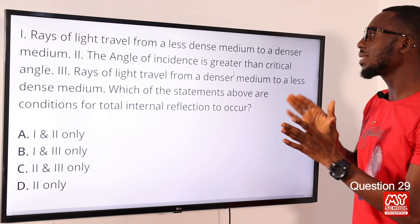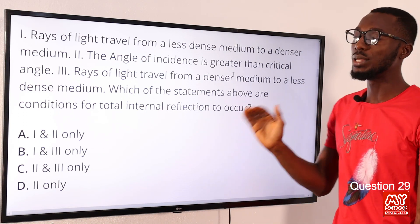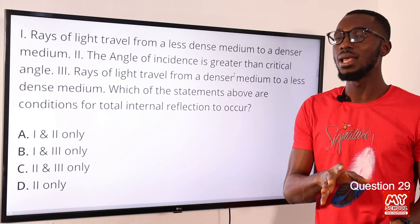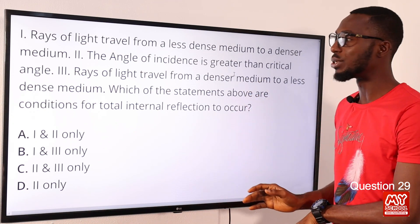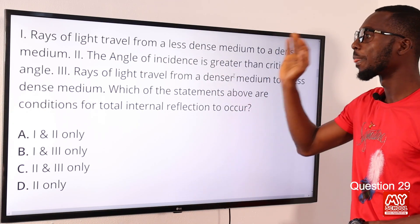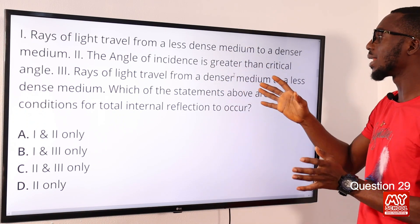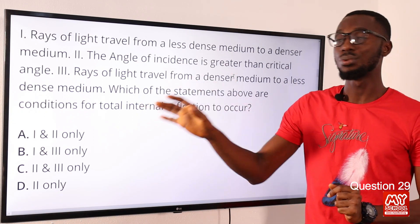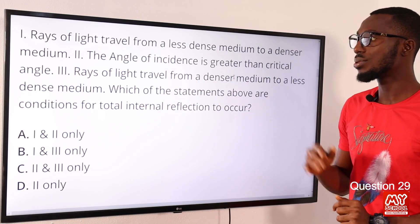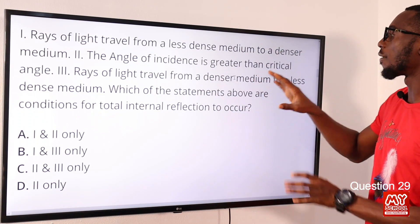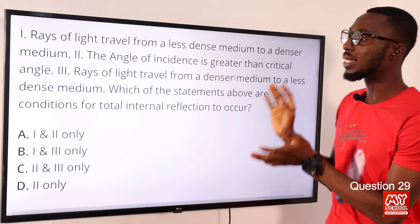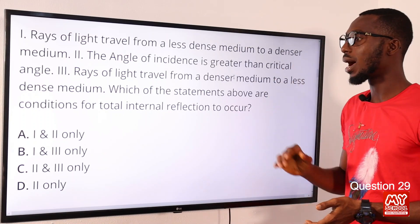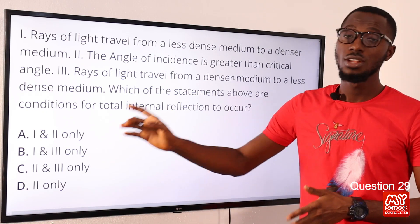Statement one says rays of light travel from a less dense medium to a denser medium — this is incorrect. It should be from an optically more dense medium to a less dense medium, so statement one is eliminated. Statement two — the angle of incidence in the denser medium is greater than the critical angle — this is valid. Statement three — rays of light travel from a denser medium to a less dense medium — this is also correct.